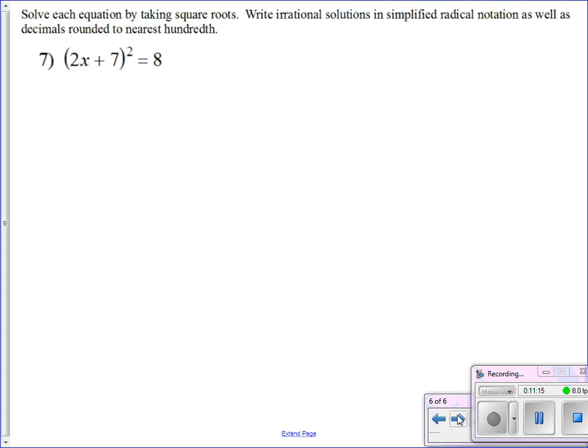All right, our final example. This is very similar to the last example. I'd like you to pause the video now, try this on your own, and I'll check back in a few seconds with my solution. All right, so as we've seen all day, we want to undo that second power. Let's square root both sides. On the left, it cancels out beautifully. Basically, 2x plus 7 then equals plus or minus the square root of 8.